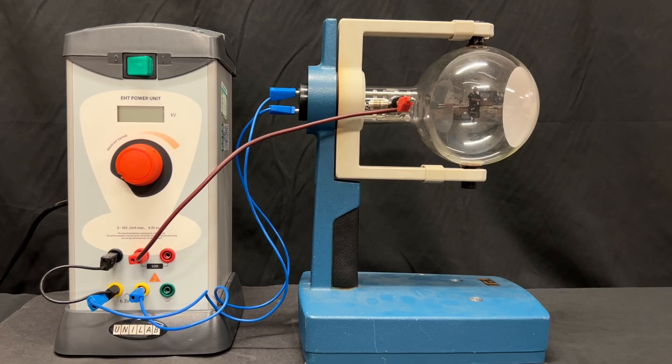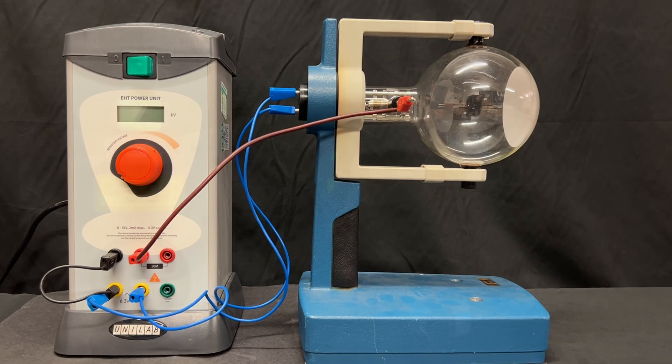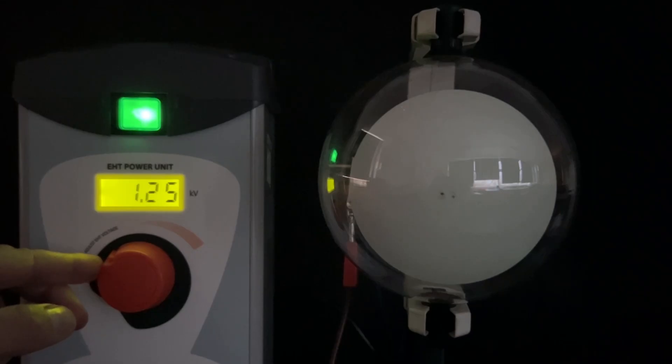Sadly, without better funding, almost no school science department will be able to afford the £1,000 to buy a new electron diffraction tube, which led me to gamble £100 on buying a vintage one which wasn't tested.